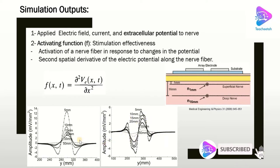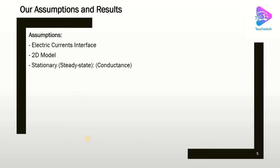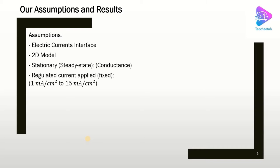Let's see if we can get results similar to these in our simulation. We are going to do the simulation in the Electric Currents interface, using a 2D model for simplicity — though you can extend it to 3D. We are modeling the stationary or steady-state model, where only the conductance is inserted into our equations. In the time-dependent model, both conductance and permittivity are considered. We are going to use regulated current, applying a constant current within the range normally used based on references.